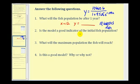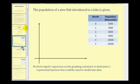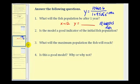Number two is the model a good indicator of the initial fish population. Going back to our data, the initial fish population was a thousand times a thousand or one million fish. Using our model, if we replace x with zero, that'll give us the initial amount based upon the model.